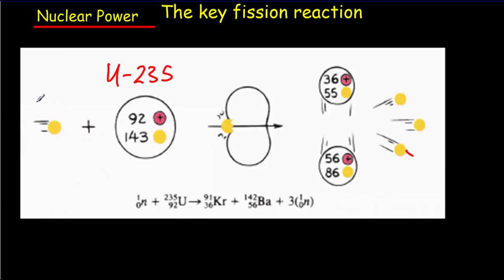What happens is a slow-moving neutron will strike the uranium-235 nucleus, make it elongated and unstable. And what will happen is you'll get a krypton, a barium, and then three neutrons fired out. And these particles have a lot of kinetic energy, so there's a lot of energy available to be converted into electrical energy at the nuclear power plant.